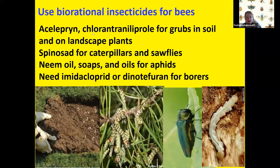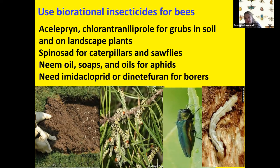Here's the name aceleprin — chlorantraniliprole — that's in Grub-X, and you can also spray it. Here are the two neonics: imidacloprid, clothianidin, thiamethoxam, and dinotefuran. We talked about their non-target effects. They should only be used when needed for borers or something specific. If you can manage with bio-rational chemicals, then you should. The neonics actually do not work on borers — the chemistry doesn't work on borers — so you have to use something like nematodes. For emerald ash borer specifically, you need the neonics or emamectin benzoate — there's no question about that.